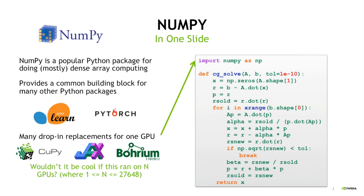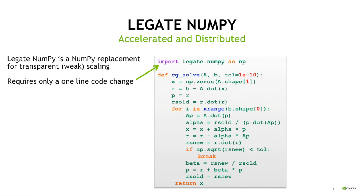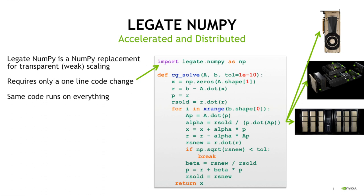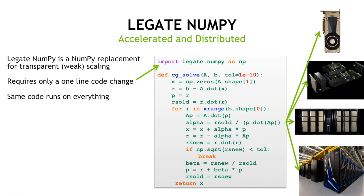The goal of Legate NumPy is to make it possible for people to run NumPy code on any number of GPUs at any scale of machine they need to target. Just like all the other drop-in replacements, we want to maintain a pure drop-in replacement that only requires changing one import statement. After that, your same code should run on everything — from a single GPU in your desktop to 16 GPUs in the DGX 2, to hundreds of GPUs in a DGX SuperPod, to the 27,000 GPUs in the Summit supercomputer.